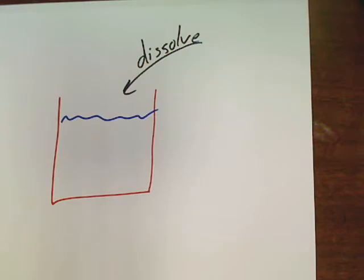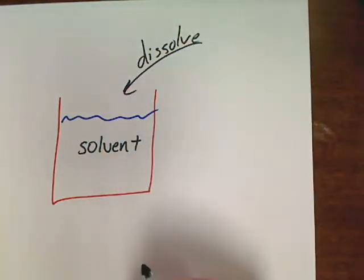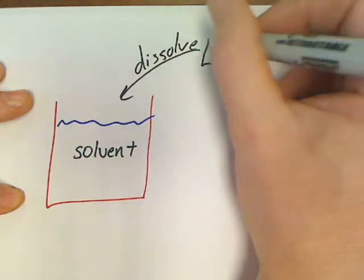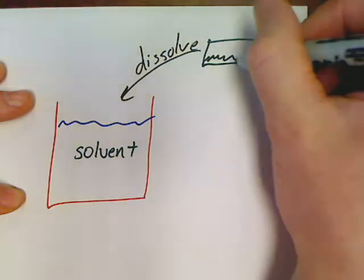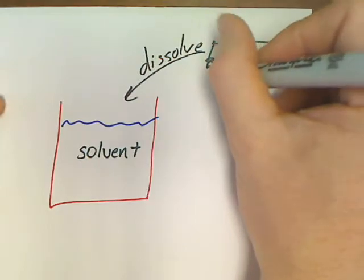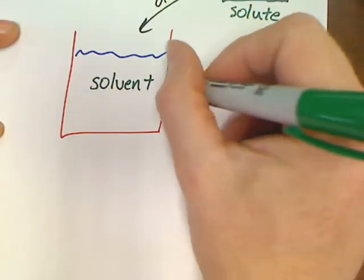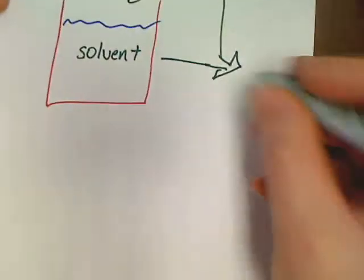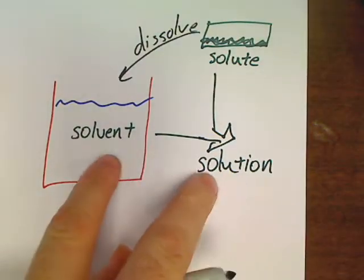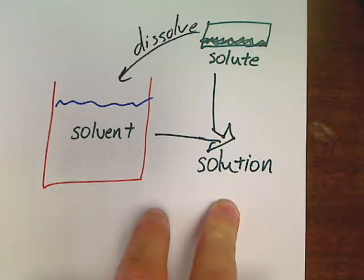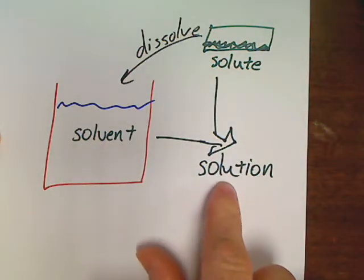Whatever is doing the dissolving, that's what we call the solvent. Whatever it is that you are dissolving — let's draw some little powder in there — that's what we call the solute. So the solute and solvent combine, and together they are known as a solution. The solvent does the dissolving, the solute gets dissolved, and then you've got the solution.